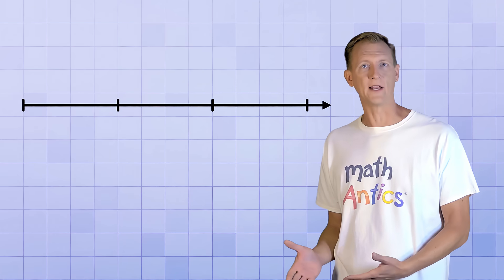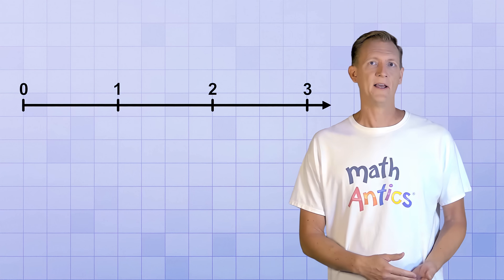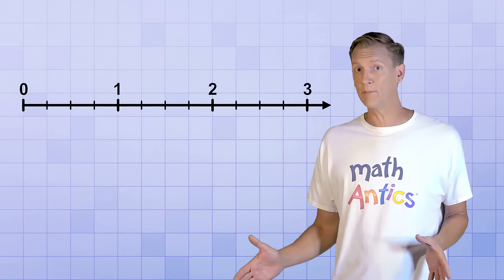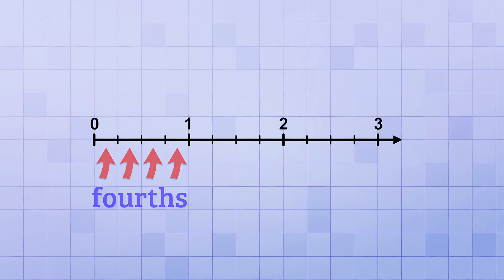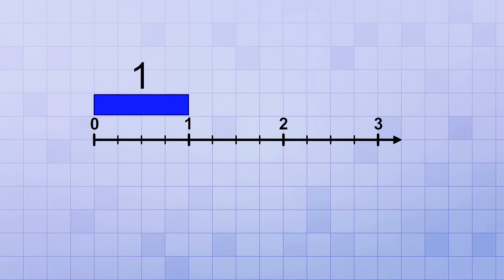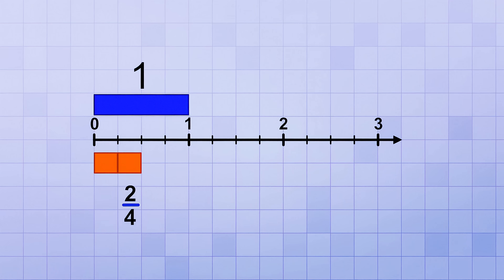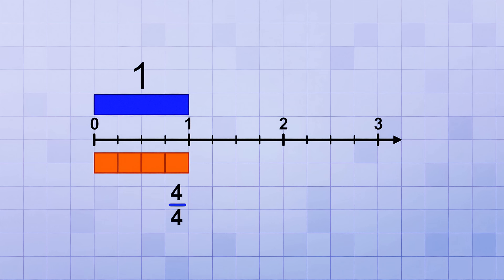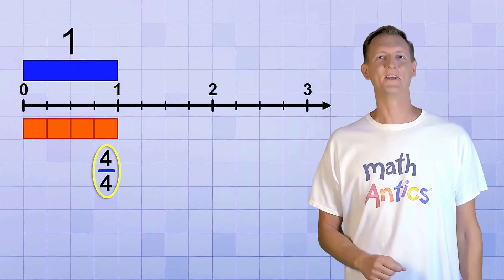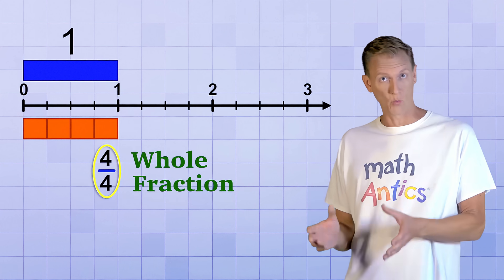To do that, let's start with a short number line that counts whole numbers from 0 to 3, and let's subdivide the spaces in between each whole number into 4 equal parts. So a block this size represents the amount 1 because it covers the distance from 0 to 1, while a block this size represents 1 fourth because it only covers the distance from 0 to the first subdivision — 1 out of 4, or 1 fourth. If we add another fourth, we get 2 fourths; adding another gives us 3 fourths; and adding another gives us 4 fourths.